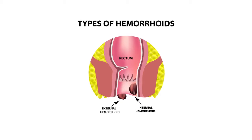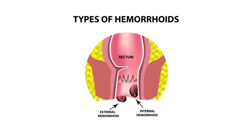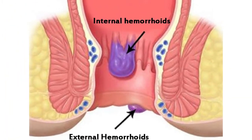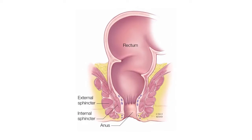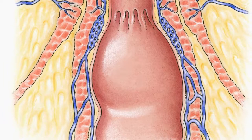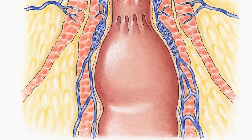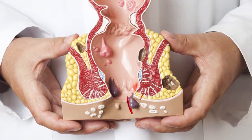External hemorrhoids are located underneath the skin that surrounds the anus and are lower than internal hemorrhoids. They can be felt when they swell and may cause itching, pain, or bleeding with a bowel movement. Hemorrhoids help control bowel movements and are only considered abnormal or a disease when the clumps of vessels enlarge.